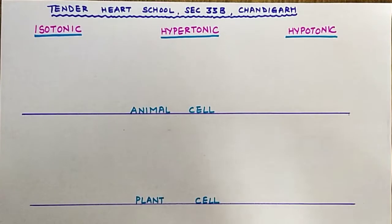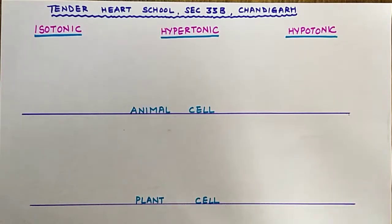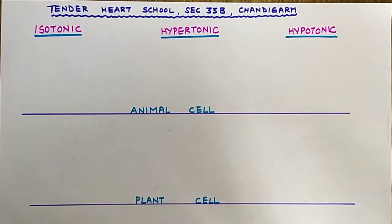Let me first give you the introduction. The isotonic solution is a solution where the relative concentration of water molecules and solute on either side of the cell membrane is the same. In a hypotonic solution, the outside of the cell has a lower solute concentration than the fluids inside the cell. In a hypertonic solution, the outside of the cell has a higher solute concentration than the fluids inside the cell.